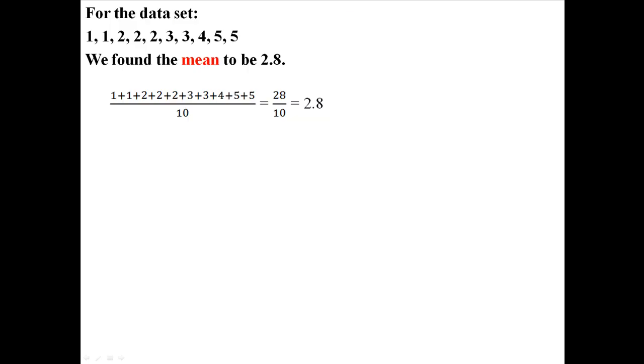For that data set we found the mean to be 2.8. For this new data set, what would you expect the mean to be? We could probably expect it to be higher because the numbers going into it are much higher. We would expect the average value, the representative value for this data set, to be higher than the other one.